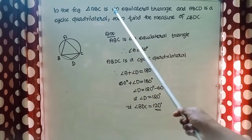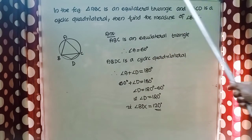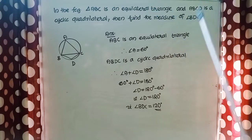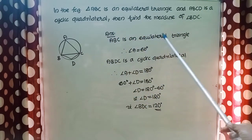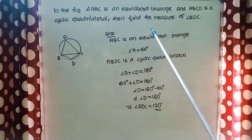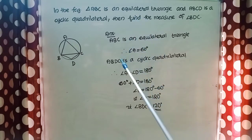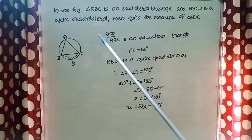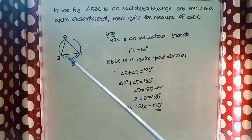In the figure, triangle ABC is an equilateral triangle and ABCD is a cyclic quadrilateral. Find the measure of angle BDC. Since triangle ABC is equilateral, each angle is 60 degrees, so angle A equals 60 degrees. Since ABCD is a cyclic quadrilateral, its opposite angles are supplementary.